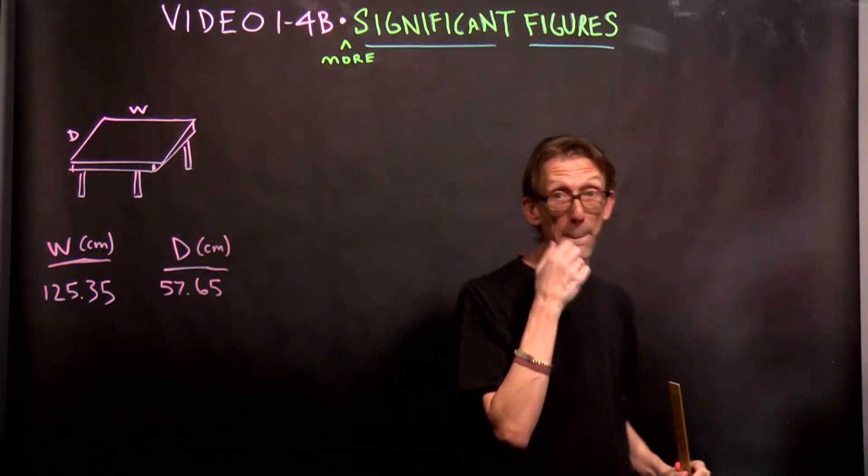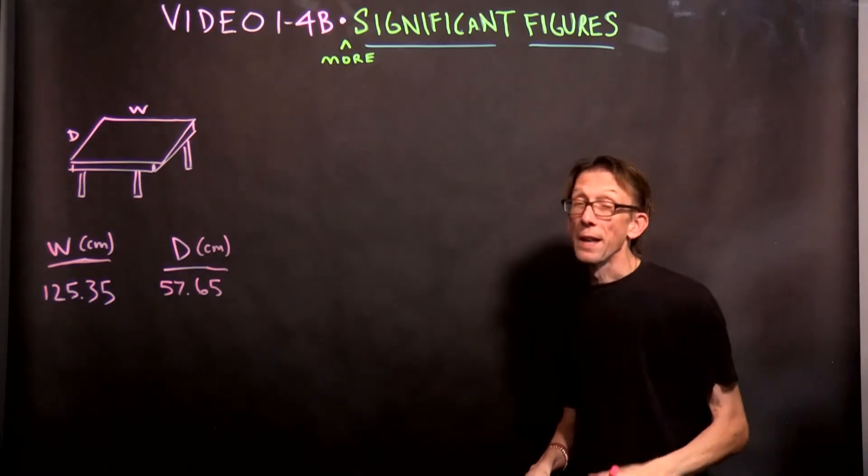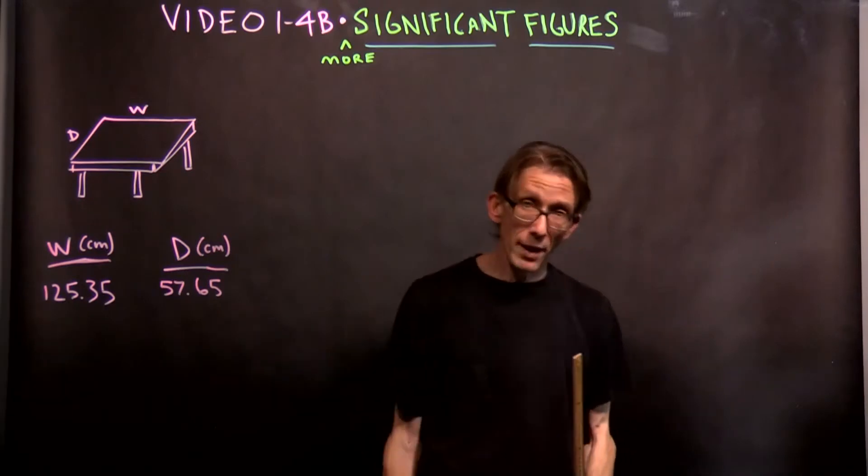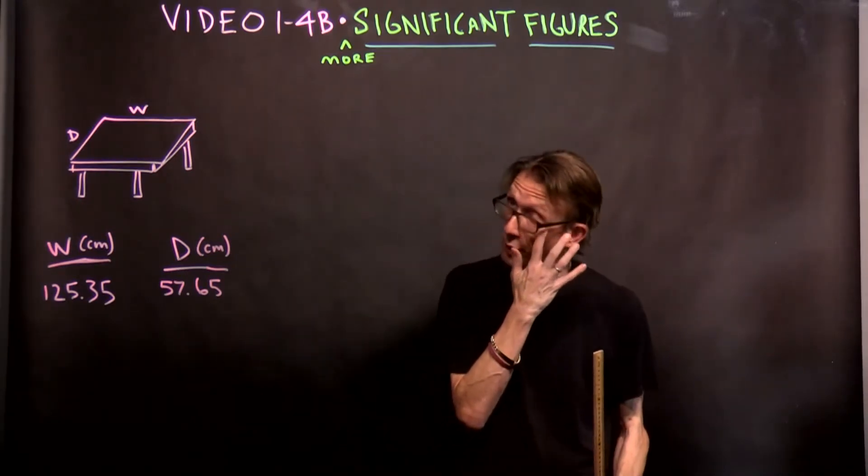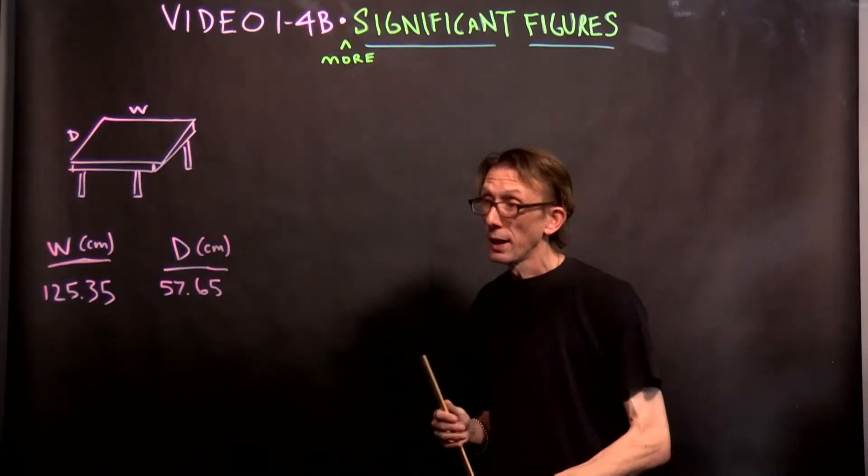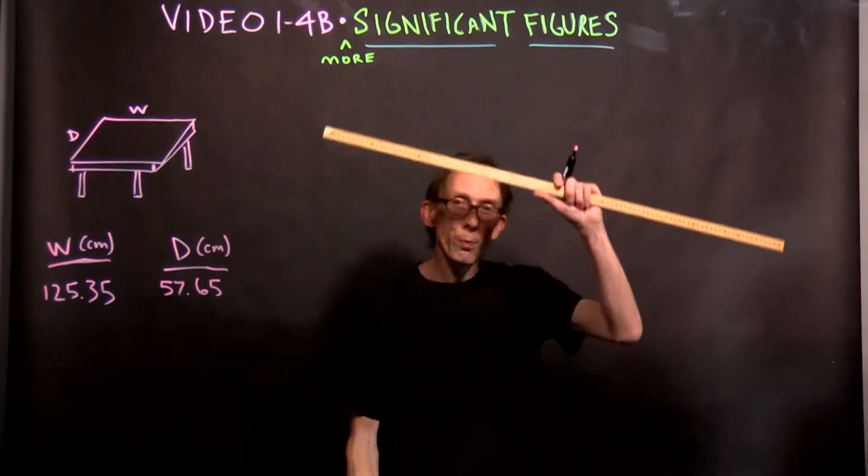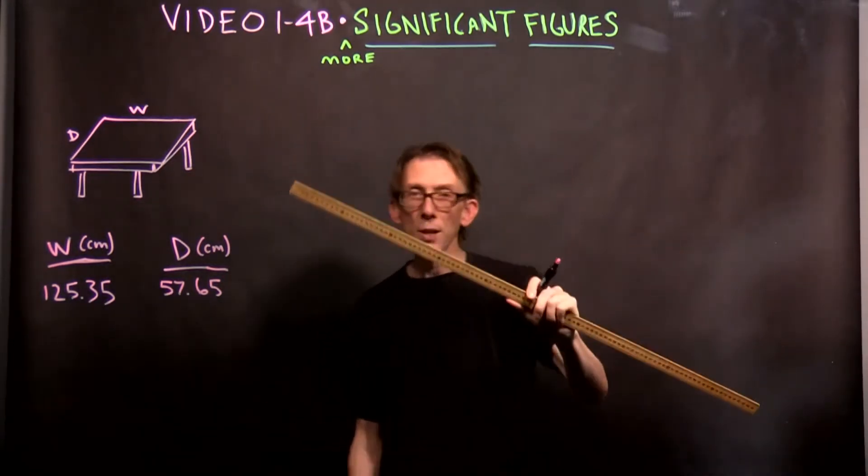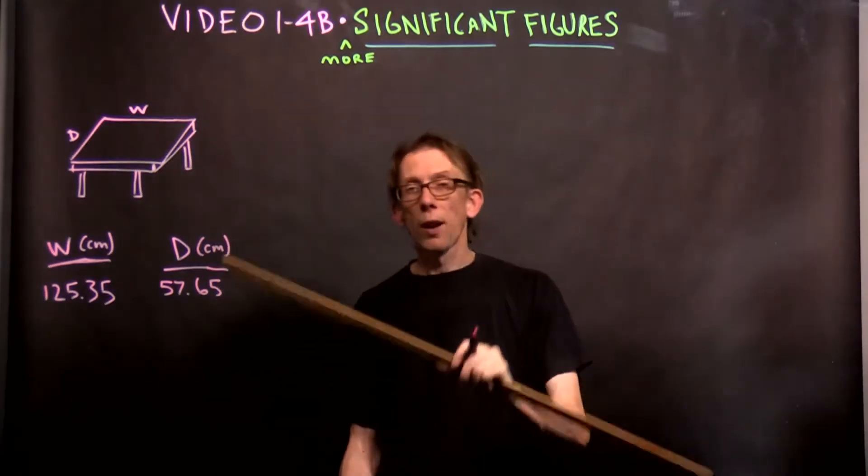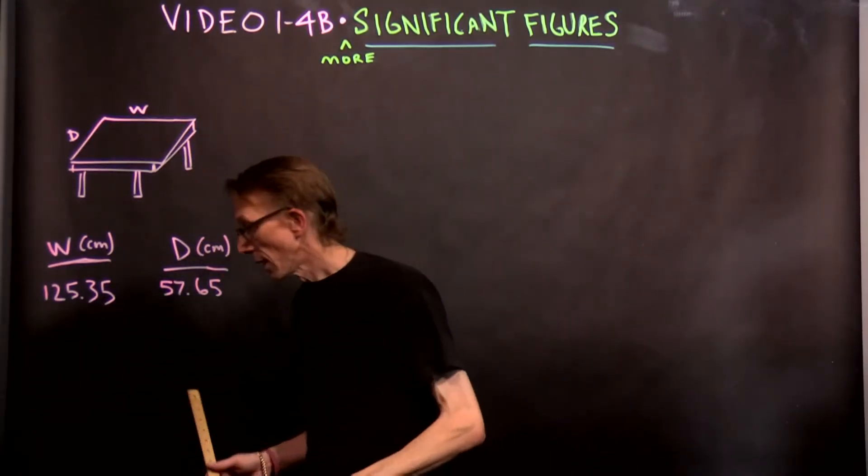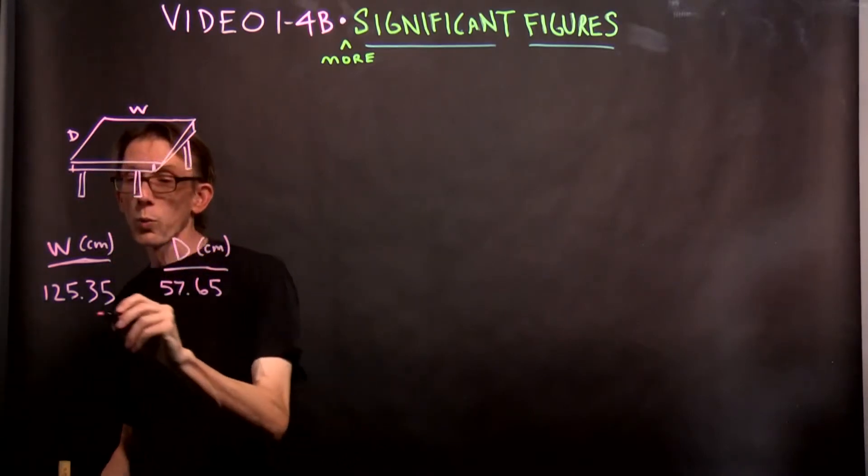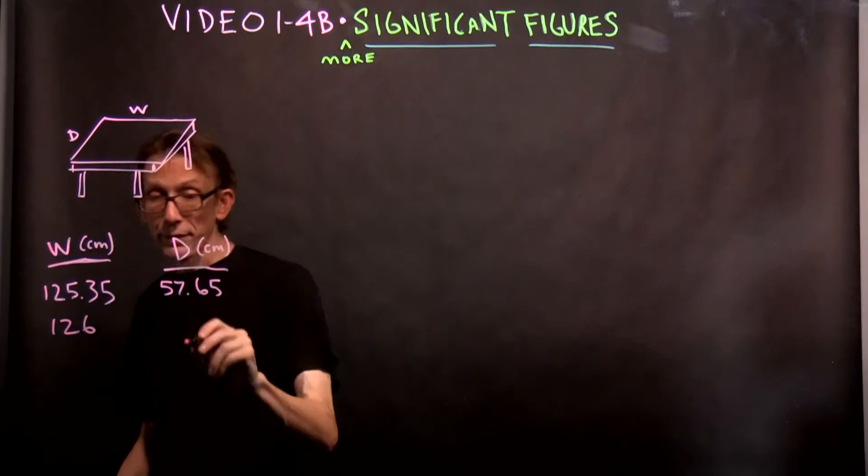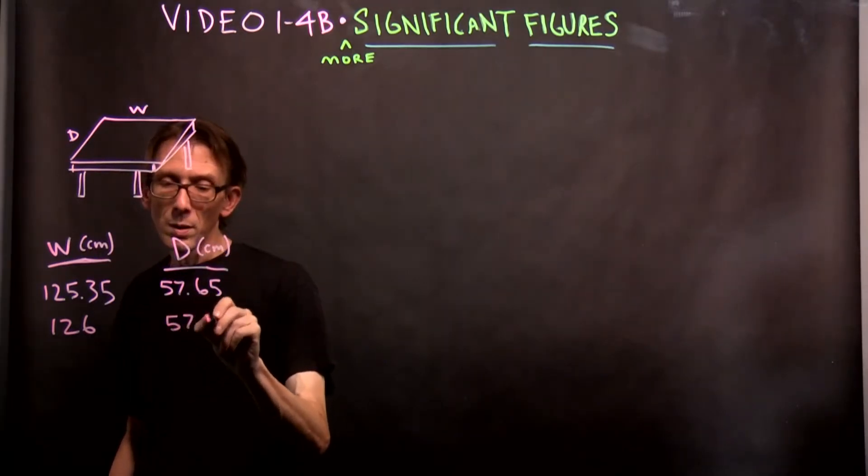Perfectly fine. Okay? And then I call up, we all applaud student A. Student A goes back down, sits down at her desk and student B comes up and I ask her the same thing. I say, will you please measure the width and depth of this desk with this meter stick and write down your answers for me. She does the same thing, measures width and depth in centimeters and comes back with 126 and 57 point one.